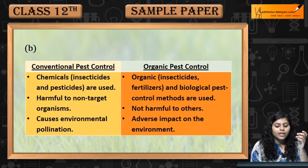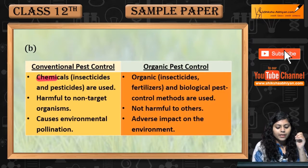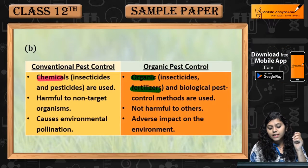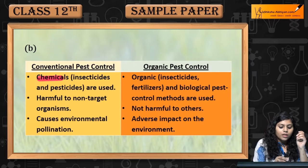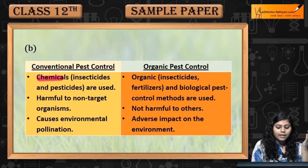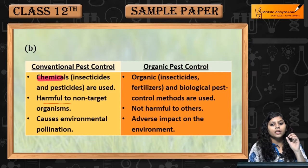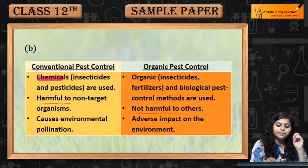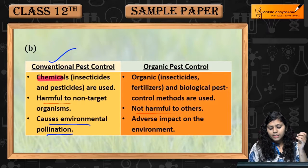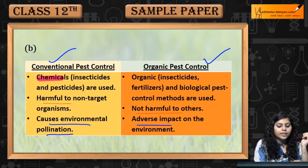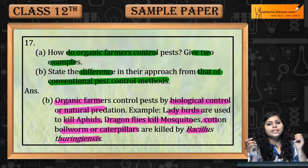Differences kya kya hai? Conventional pest control me chemicals use hote hain, whereas organic me organic fertilizers ya phir biological agents use hote hain. Conventional method harmful hai to non-target organisms also, whereas organic are not harmful to others. Conventional method causes environmental pollution, whereas organic pest control has less adverse impact on the environment. This was question number 17.